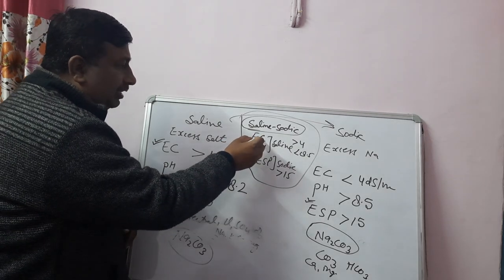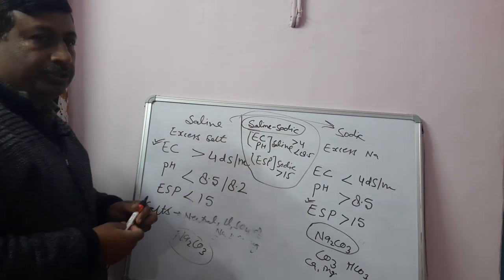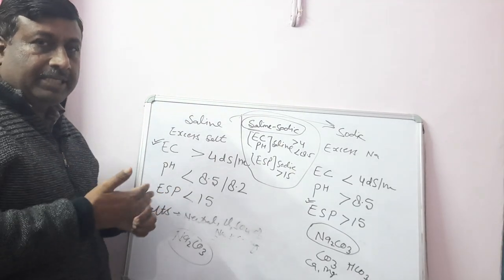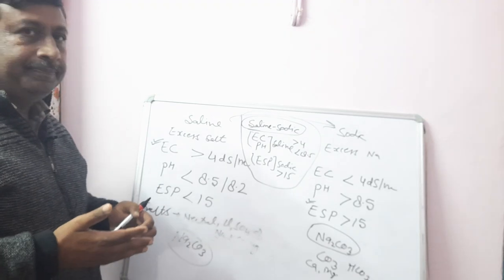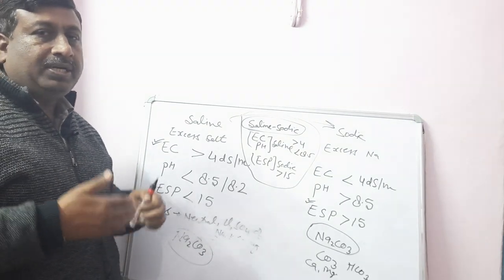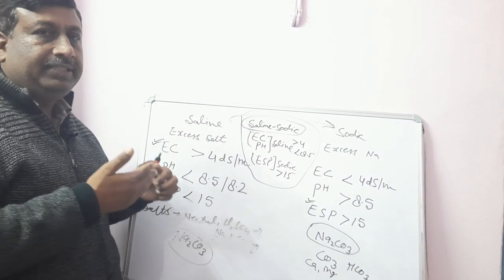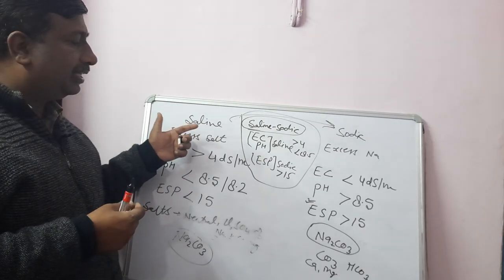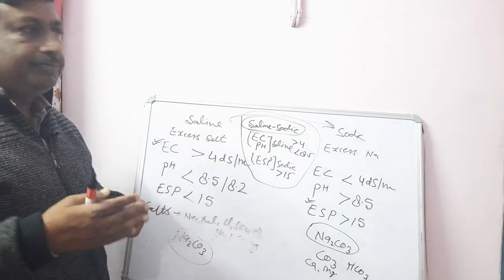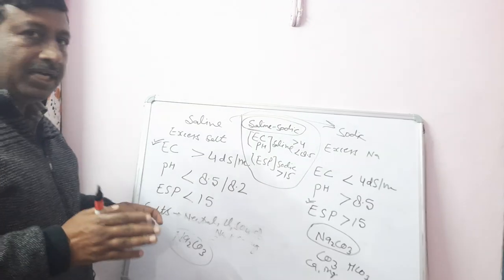So saline-sodic soil has EC and pH similar to saline soil, but ESP similar to sodic soil. This classification may appear in examinations. In the next lecture, we will discuss the adverse effects of saline soil (white alkali soil), sodic soil (black alkali soil), and how these soils can be reclaimed.